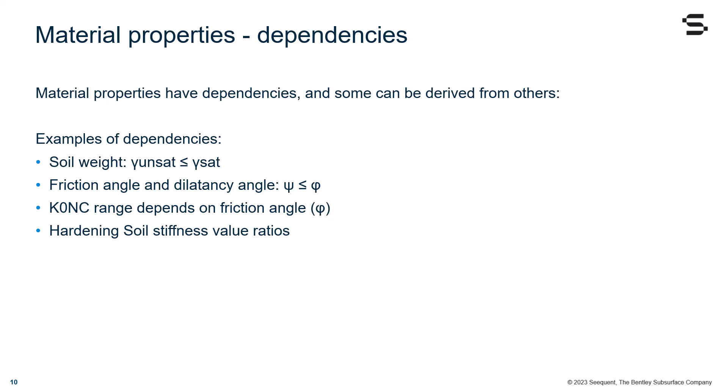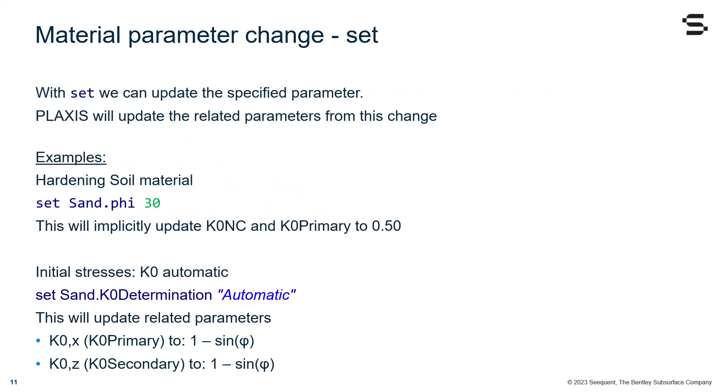The soil or rock unit weight, gammaUnsat must be smaller or equal to gammaSat. The friction angle and the dilatancy angle, psi, must be smaller or equal to phi. The K0 and c range depends on the friction angle phi. The hardening soil stiffness values ratios.